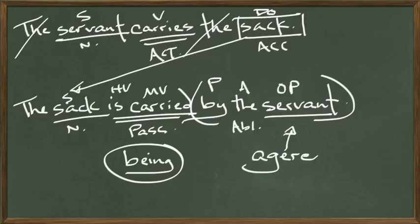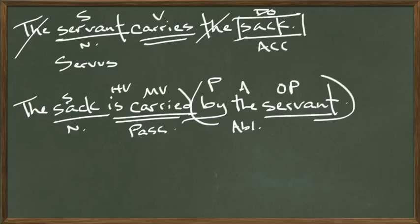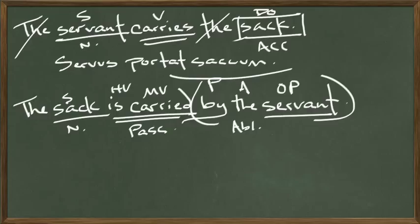Let's look at the Latin sentences. The active sentence would be: Servus sacum portat — in Latin word order the verb goes at the end, so Servus sacum portat. That's active: the subject of the sentence performs the action, we have a direct object, and we have an active verb. Servus sacum portat.